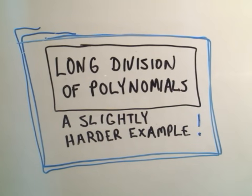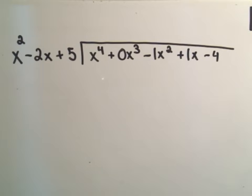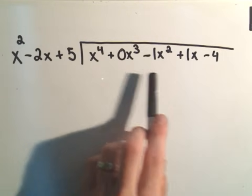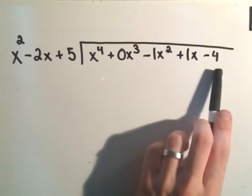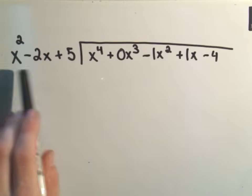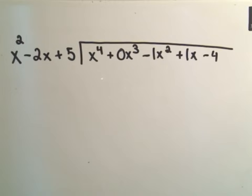Okay, in this video I want to do another long division of polynomials, an example that's maybe a touch harder than the other ones. I had a couple requests. So this time we're going to take the polynomial x to the fourth plus 0x cubed minus x squared plus x minus 4, and we're going to divide all that by x squared minus 2x plus 5.